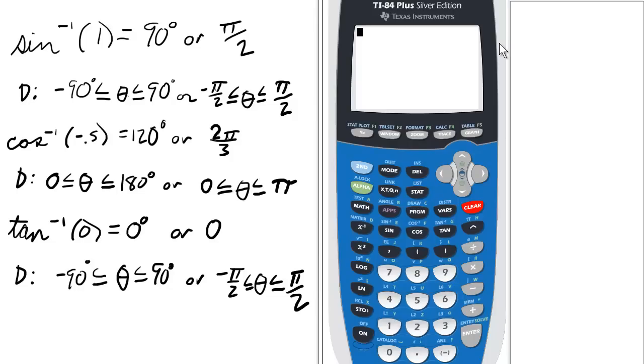Let's find the inverse sine or arc sine of 1. We press 2nd and the sine key for the inverse sine function, then 1 and enter. The answer is 90 degrees, or in radians, pi over 2.